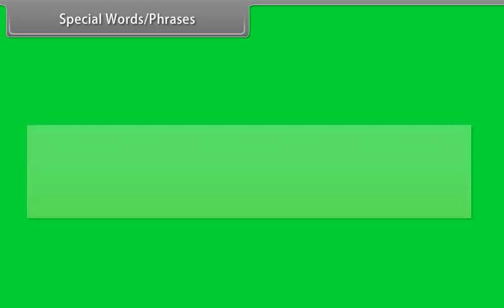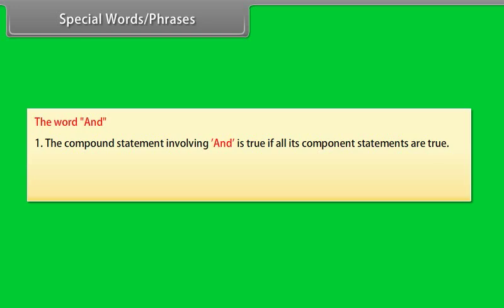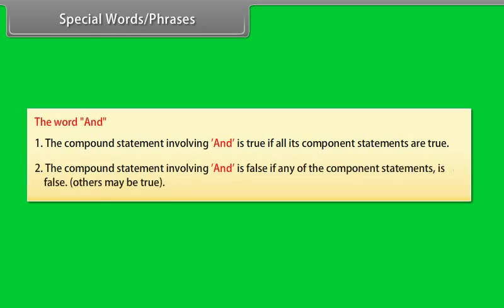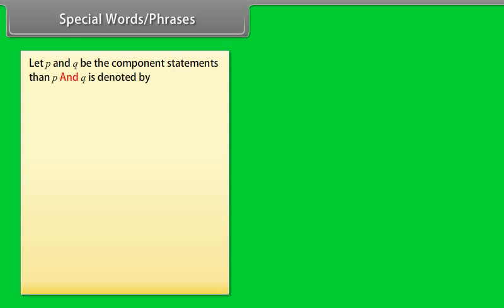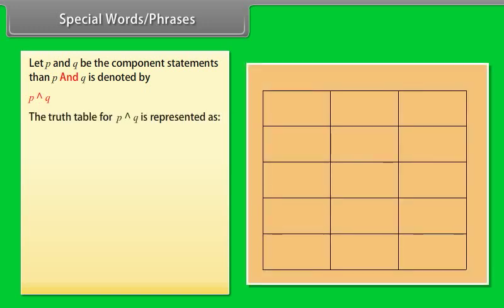Special words and phrases. The word AND: (1) A compound statement with AND is true if all its component statements are true. (2) A compound statement with AND is false if any of the component statements is false; others may be true. Let P and Q be component statements, then 'P and Q' is denoted as P ∧ Q. Truth table: P true and Q true → P∧Q true; P true and Q false → false; P false and Q true → false; P false and Q false → false.